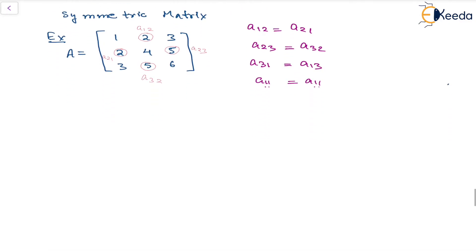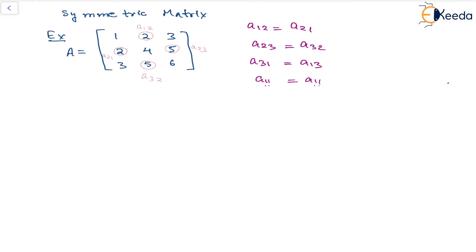Now there is another way of defining this, and that is for a square matrix. If the transpose of the matrix, that is if the transpose of the matrix is same as A, then also we can say that the matrix is symmetric.